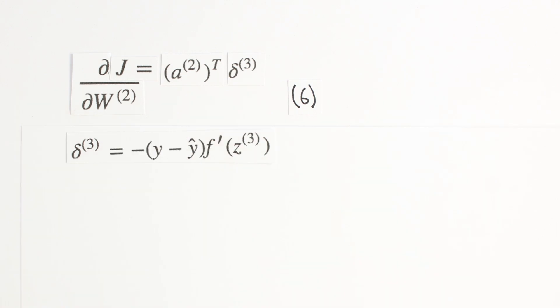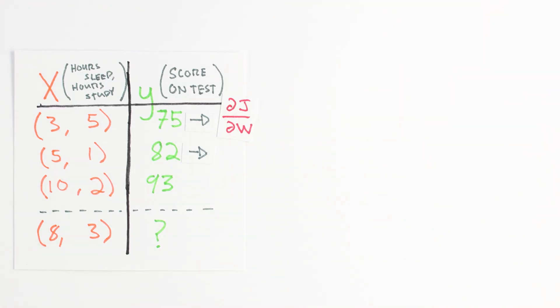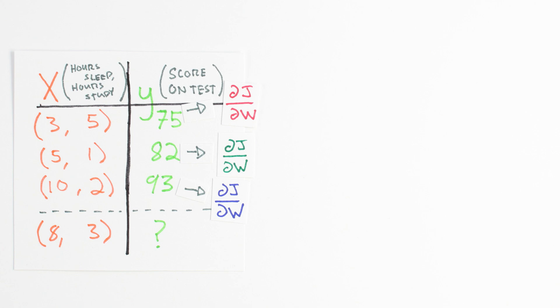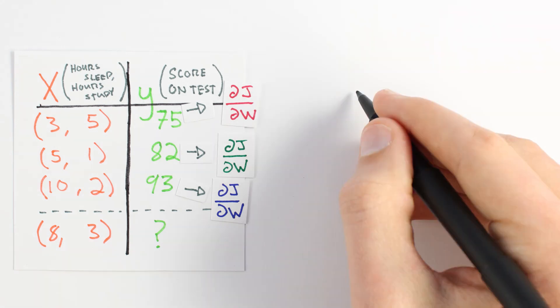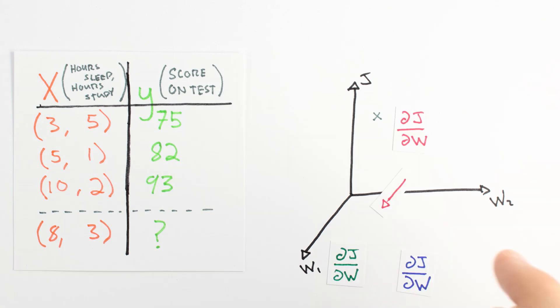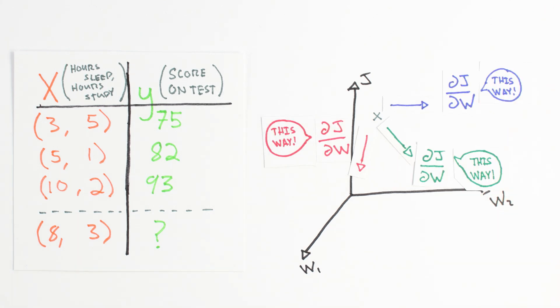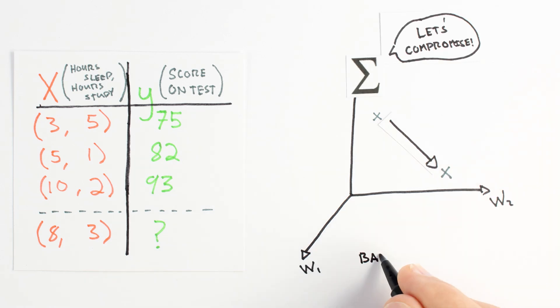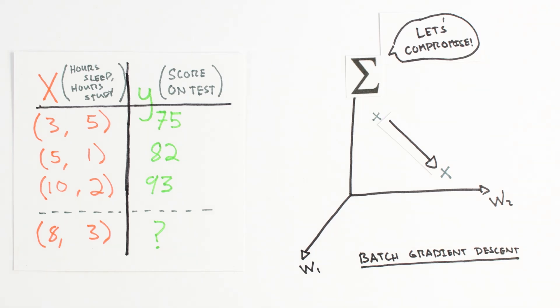Another way to think about what's happening here is that each example our algorithm sees has a certain cost and a certain gradient. The gradient with respect to each example pulls our gradient descent algorithm in a certain direction. It's like every example gets a vote on which way is downhill, and when we perform batch gradient descent, we just add together everyone's vote, call it downhill, and move in that direction.